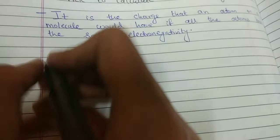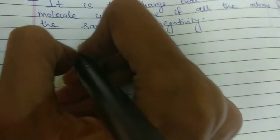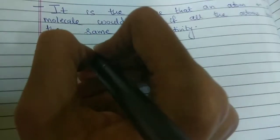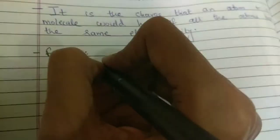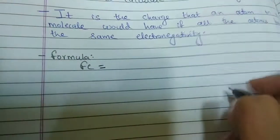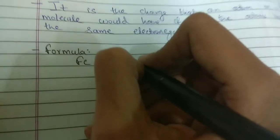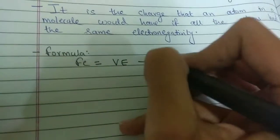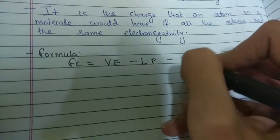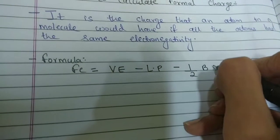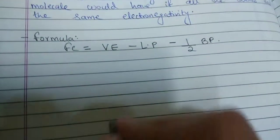So, let us start with the old formula or the formula which we have been doing from the past so many years. So, according to that formula, that describes formal charge or FC as VE where VE is the number of valence electrons of the atom. So, VE minus LP. LP is nothing but the lone pair of electrons and that minus half of BP where BP is nothing but the bonding pair of electrons.